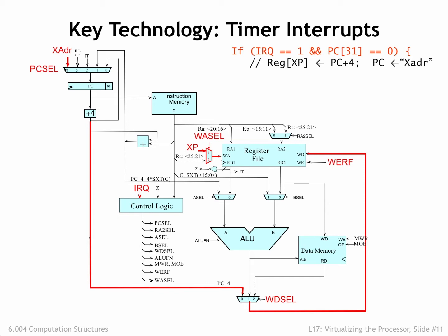The normal process of generating control signals based on the current instruction is superseded by forcing particular values for some of the control signals. PCCell is set to 4, which selects a specified kernel mode address as the next value of the program counter. The address chosen depends on the type of external interrupt. In the case of the timer interrupt, the address is 0x8008.